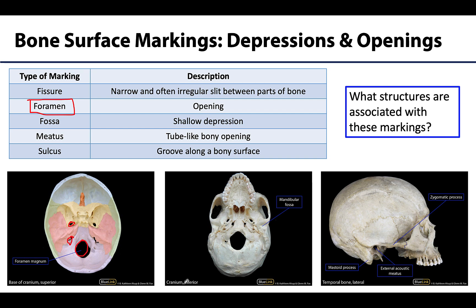A tube-like opening is a meatus, which you can see right here on the side of the skull. This particular one, the external acoustic meatus, leads from the external ear into the middle and inner ear regions. A fissure is a narrow and often irregular slit between bones or parts of bone. A fossa is a great example of a depression — typically a more shallow depression of bone, which you can see with the mandibular fossa. A sulcus is pretty similar to a fossa, but it's often a little bit deeper and will form more of a groove.